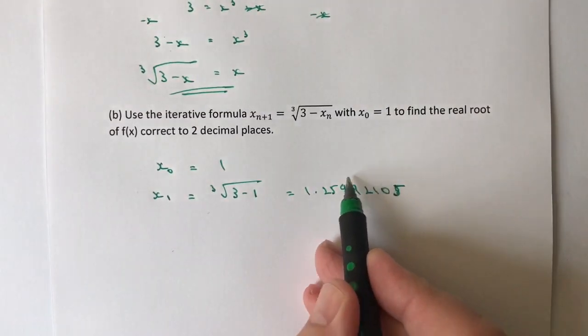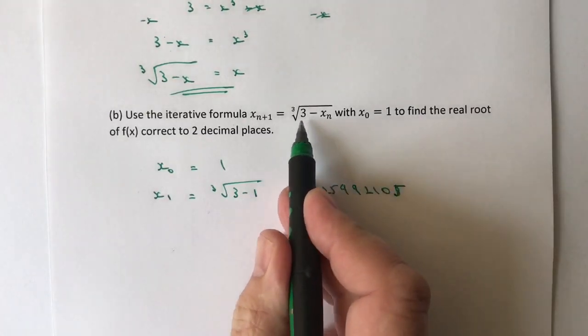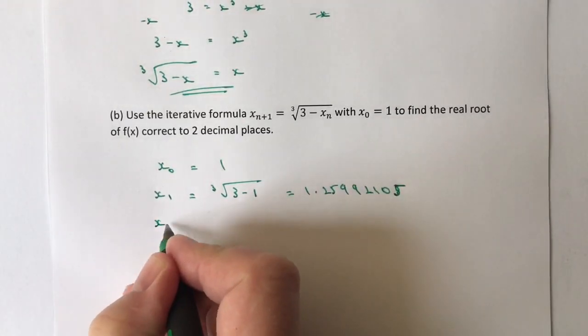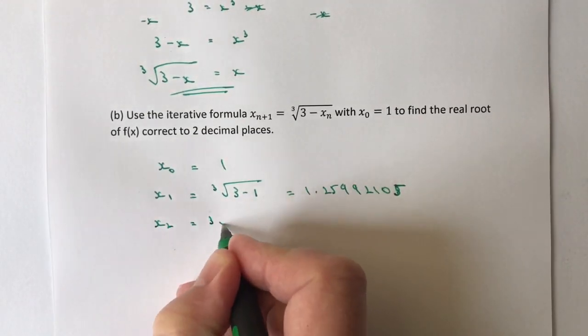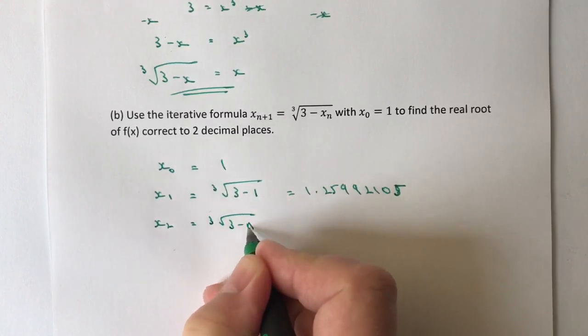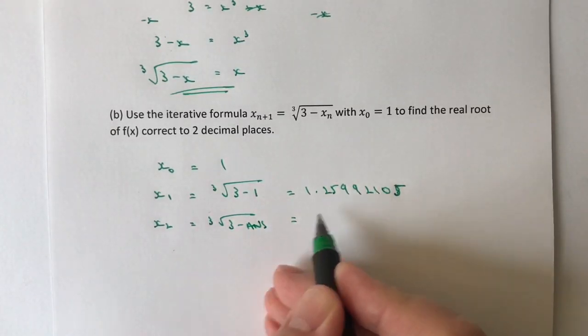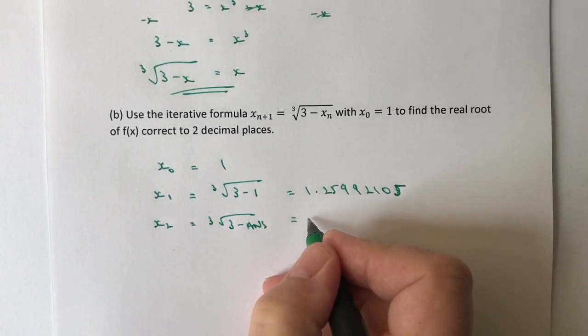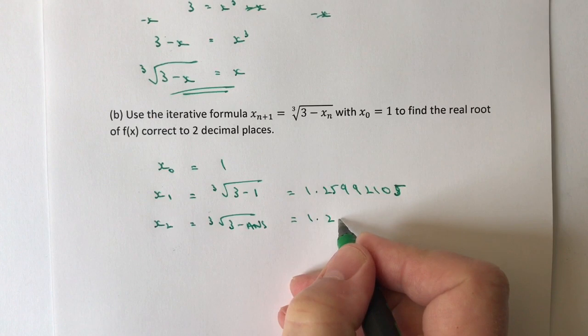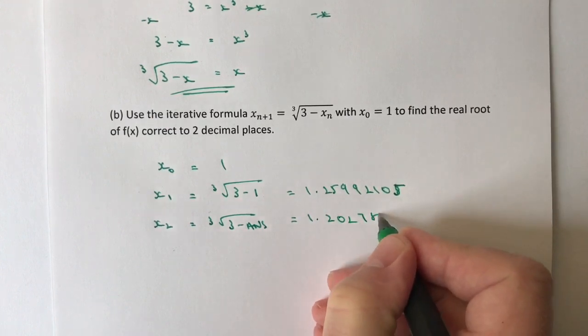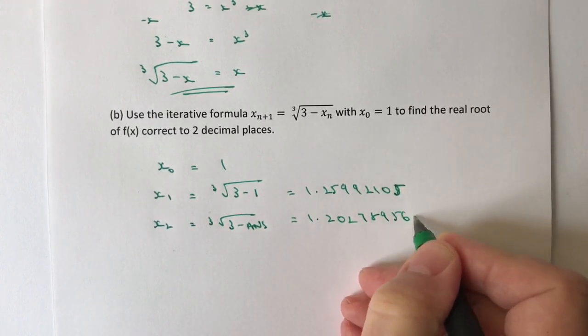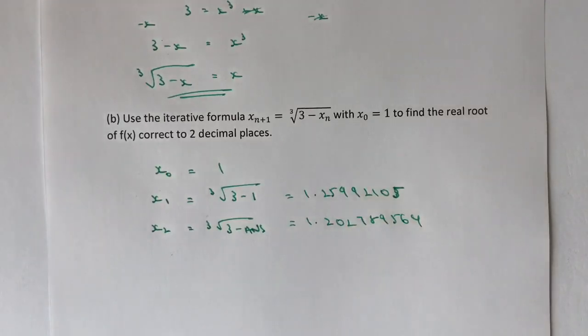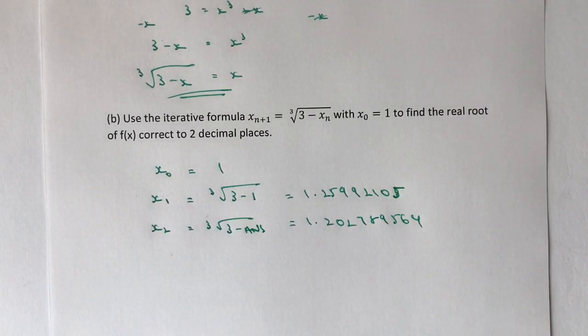We're taking now this answer and plugging it into the formula. So x₂ is going to be the cube root of three minus the answer, and that's going to give us 1.202789564.